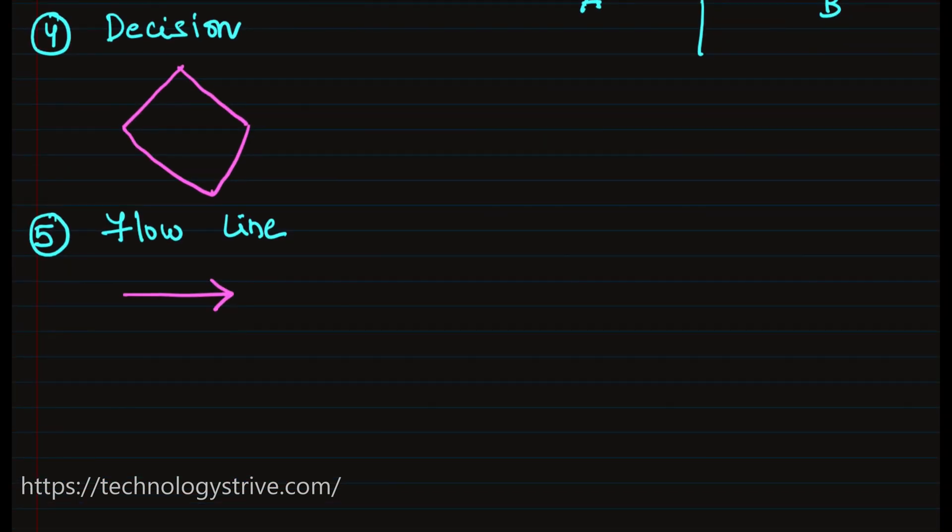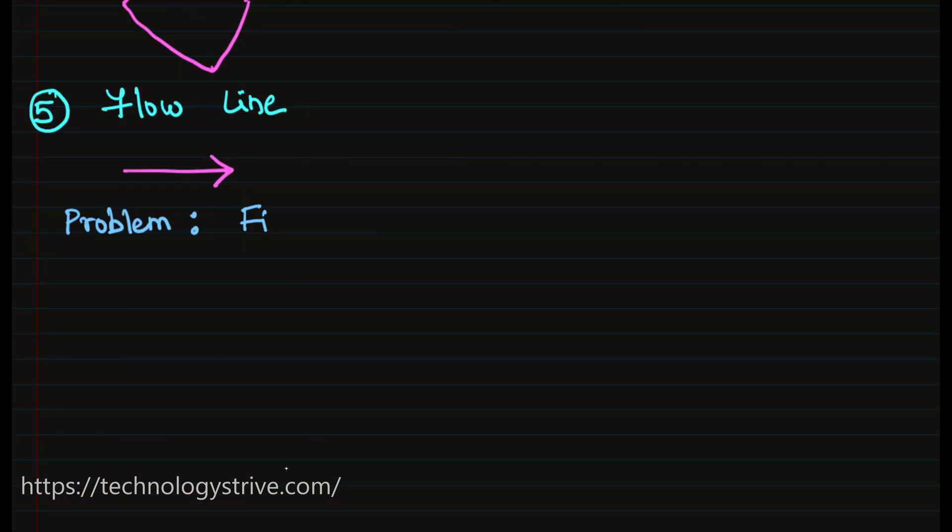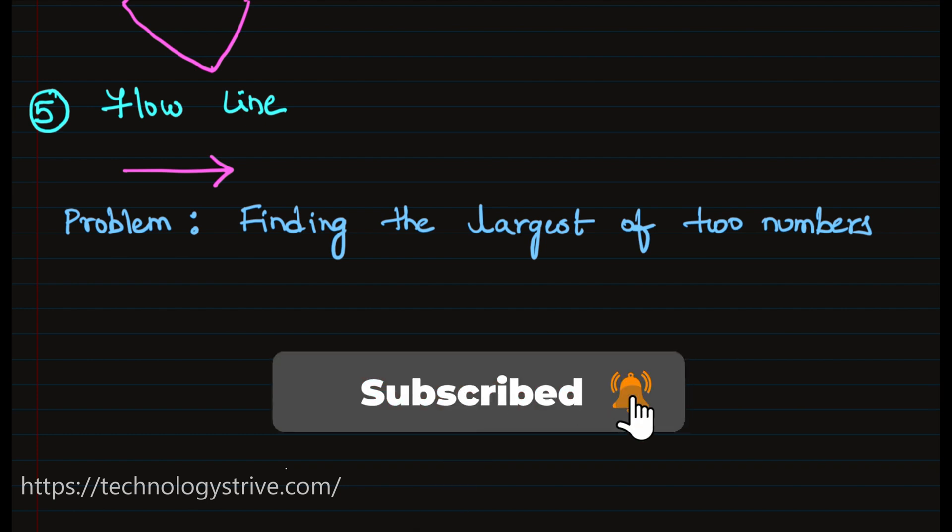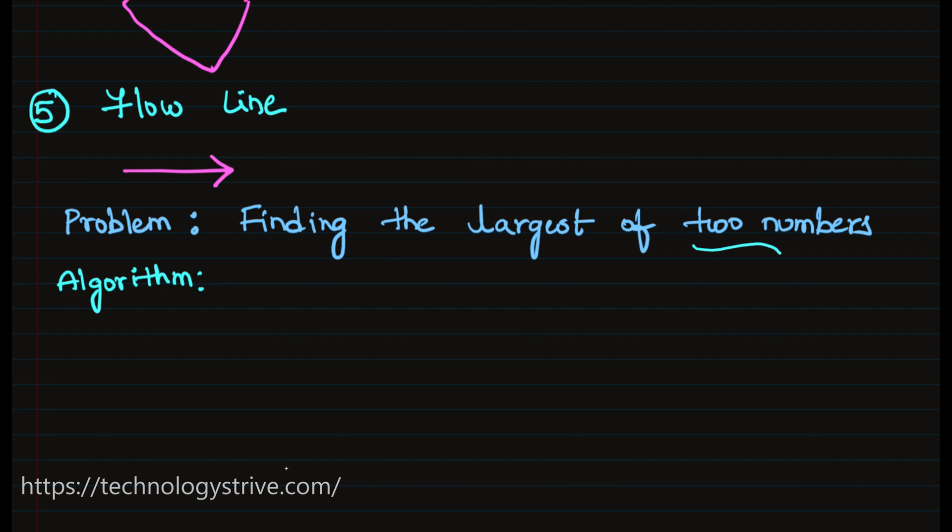Now let's discuss the algorithm and flowchart for finding the largest of two numbers. Let's write the algorithm first and then we will convert it to a flowchart. So what is the algorithm? It is mentioned that we have to find the largest of two numbers. Means the input will be two numbers, right? The first step of the algorithm is always start.